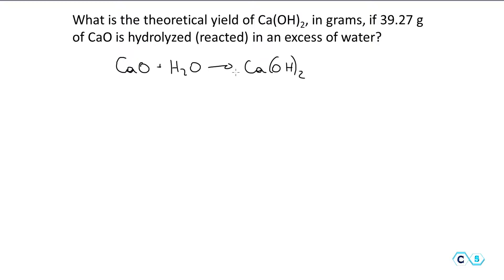We need to find the moles of calcium oxide and then do the calculations based on that. When we say theoretical yield, this means the 100% yield of the reaction — how much can in theory be produced if this were an ideal reaction with no side products and no purification issues. Ideally, how much product are we going to be able to get from this reaction?